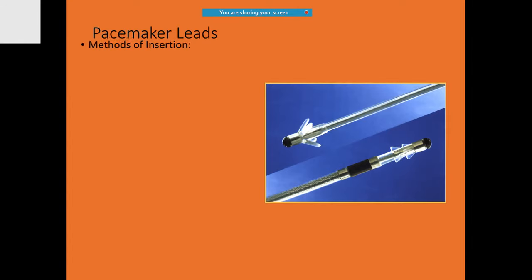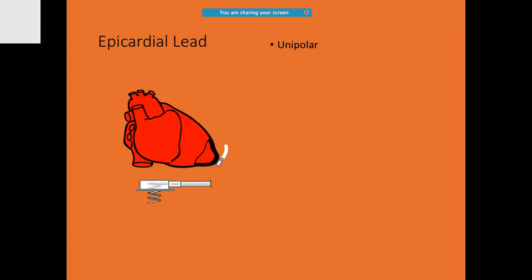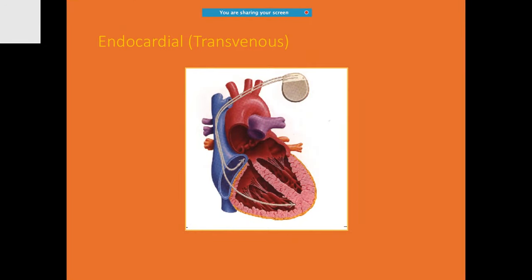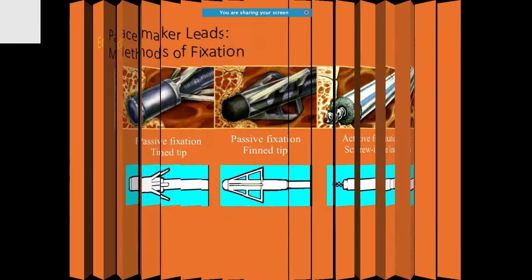There are various types of leads available — either endocardial or epicardial. Epicardial leads are mostly used by surgeons; most of them are unipolar and use higher thresholds. Cardiologists tend to use endocardial leads. Endocardial leads, on the basis of their morphology especially at the tip, may need passive fixation — for example, the tined tip or the finned tip allows passive fixation.